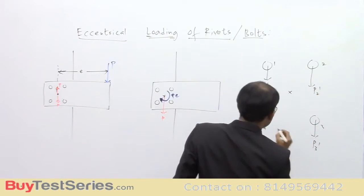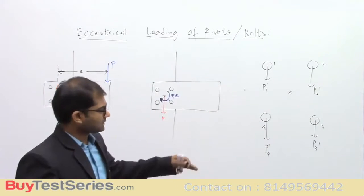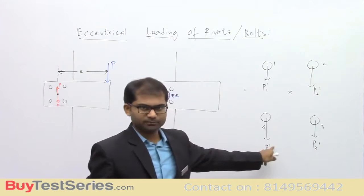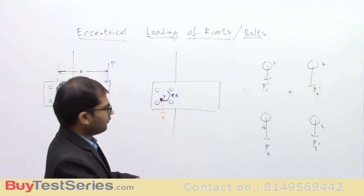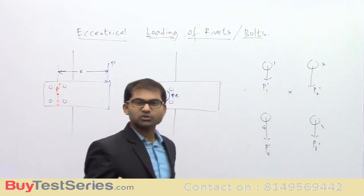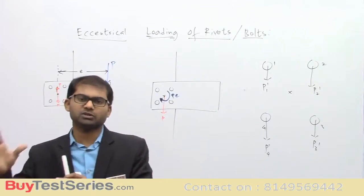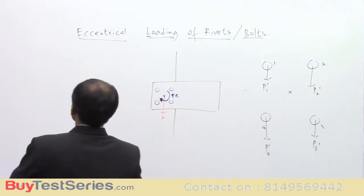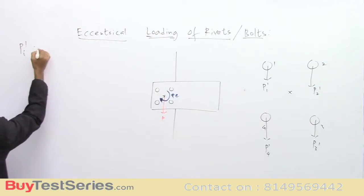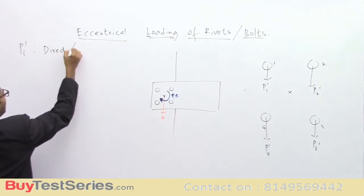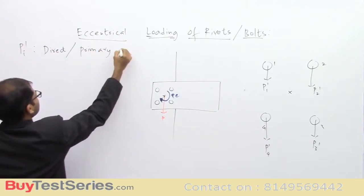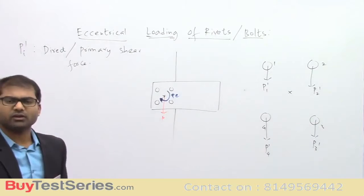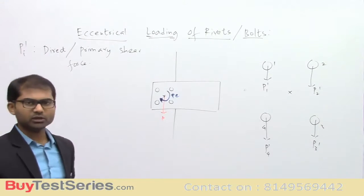I denote these as single-dash forces (P1', P2', P3', P4') because the forces corresponding to the moment will be denoted with double-dash. These forces are produced because the input is a direct force and the output is a force, so we call them direct or primary shear forces. They are called shear forces because they act parallel to the area of projection of the rivets. If they acted perpendicular to the area of projection, they would be called tensile forces.